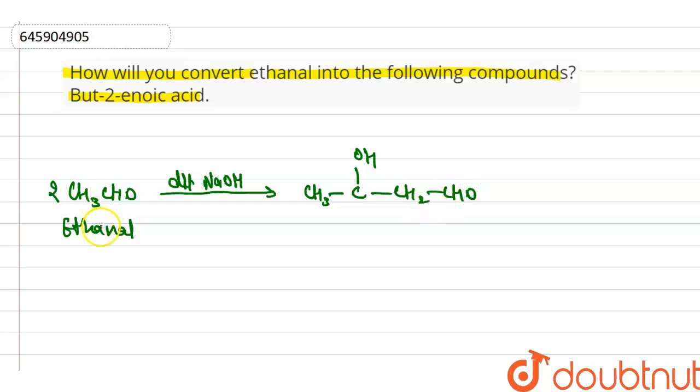Ethanol has an alpha carbon present, so here the reaction is aldol condensation. The product name is 3-hydroxybutanal. Here water will be removed.